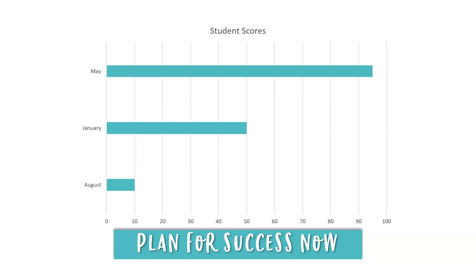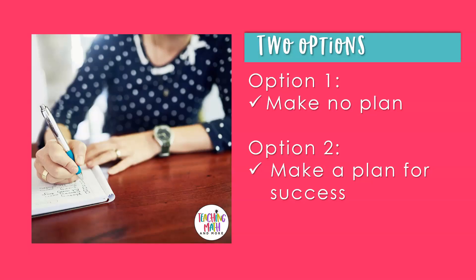This is just an example of grade-level math scores at the beginning, middle, and end of the school year. You have two options. Option one: make no plan. Choosing to make no plan is a choice — you are planning to not seek different results. Or option two: make a plan for success. Choosing to make a plan for success is a choice to help your students. You are planning to seek better results for them and further their success in mathematics.